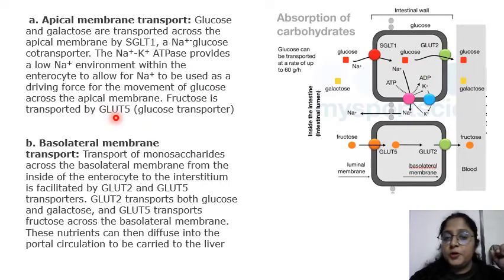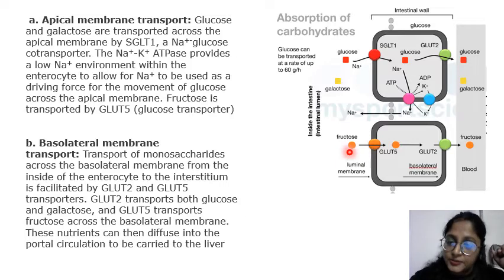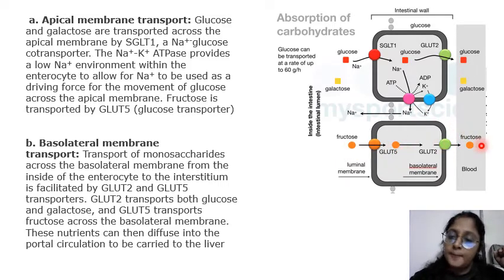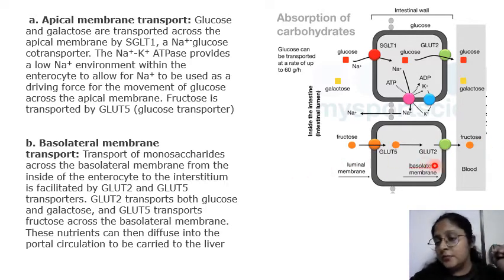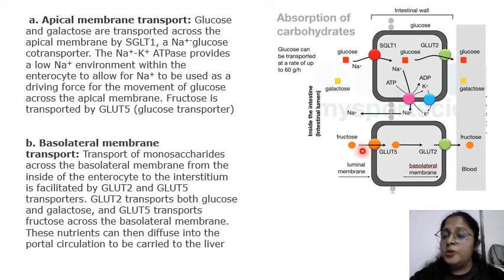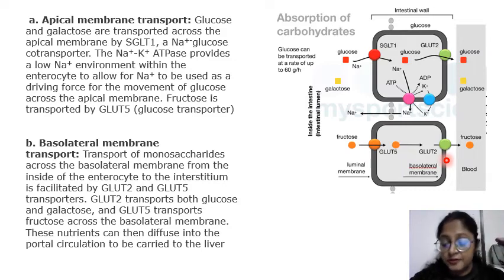Fructose is transported by GLUT5 — glucose transporter 5 — across the apical membrane first, and then by GLUT2 to the blood. Fructose does not use sodium-potassium ATPase or active transport; instead, fructose is transported from the luminal membrane to the blood by facilitated diffusion.